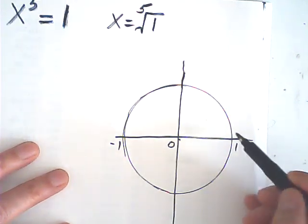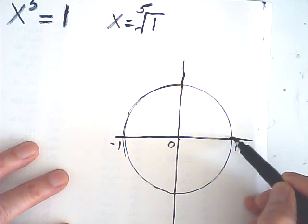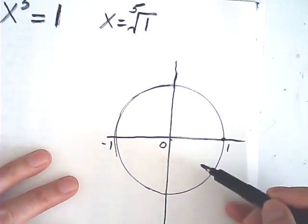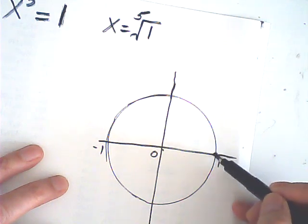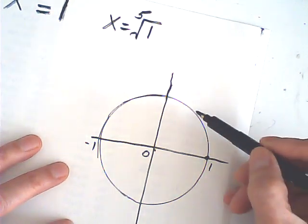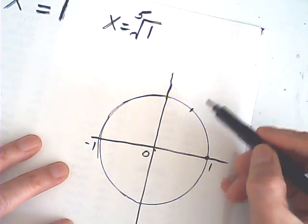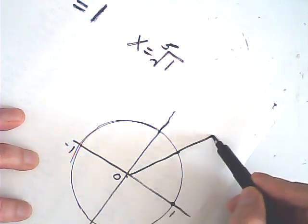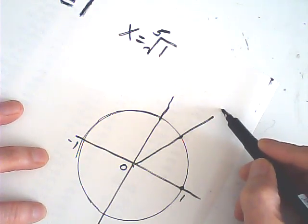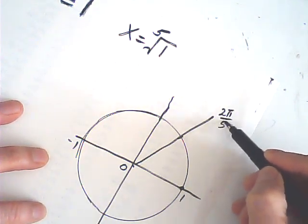And we know that one is one of the roots. One is the unit. It is the fifth root. And the next one will be, well, let me draw. This angle is 2 pi over 5, right?